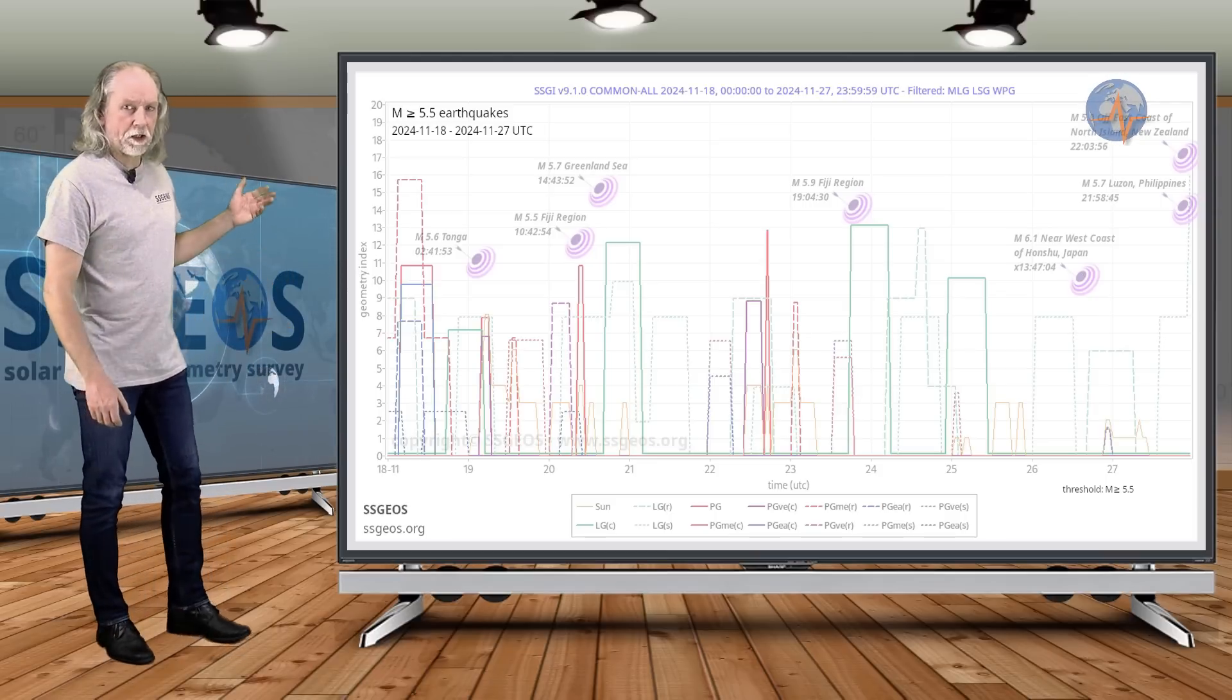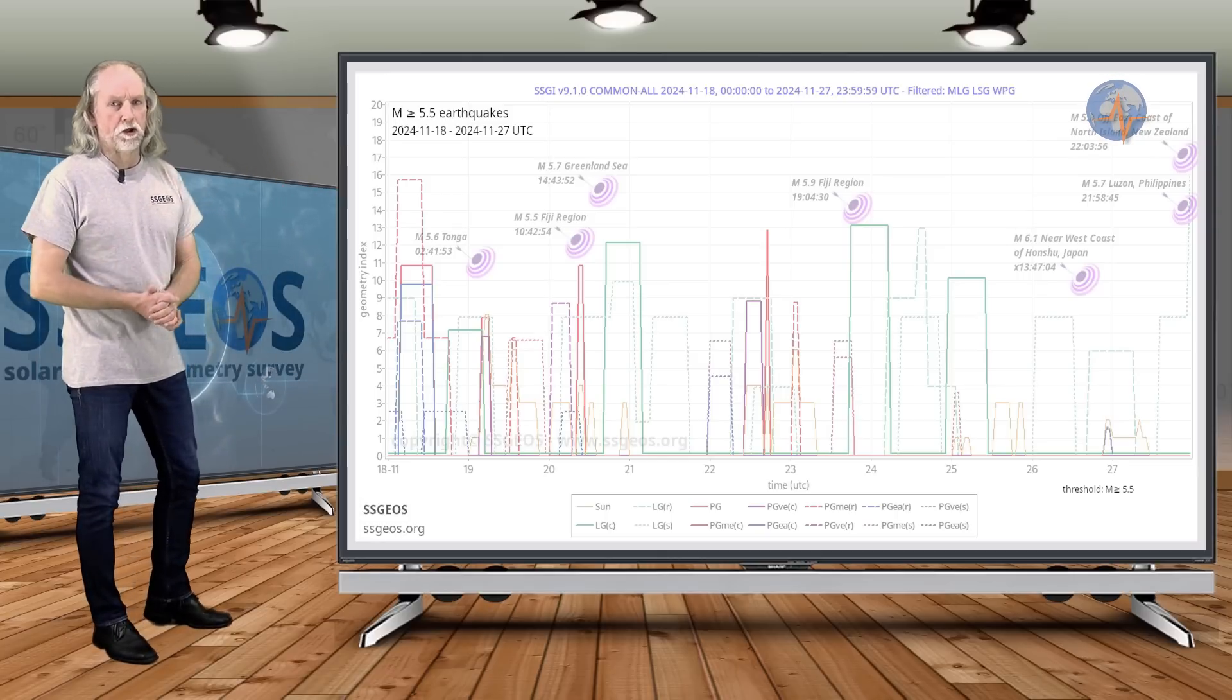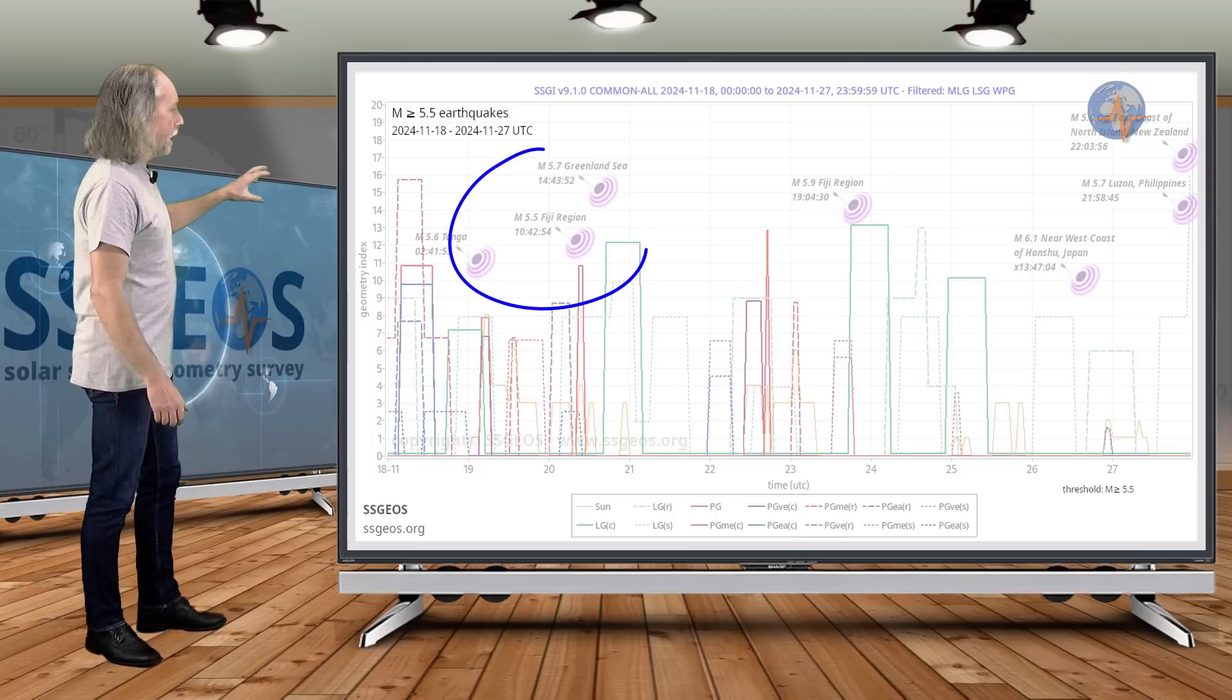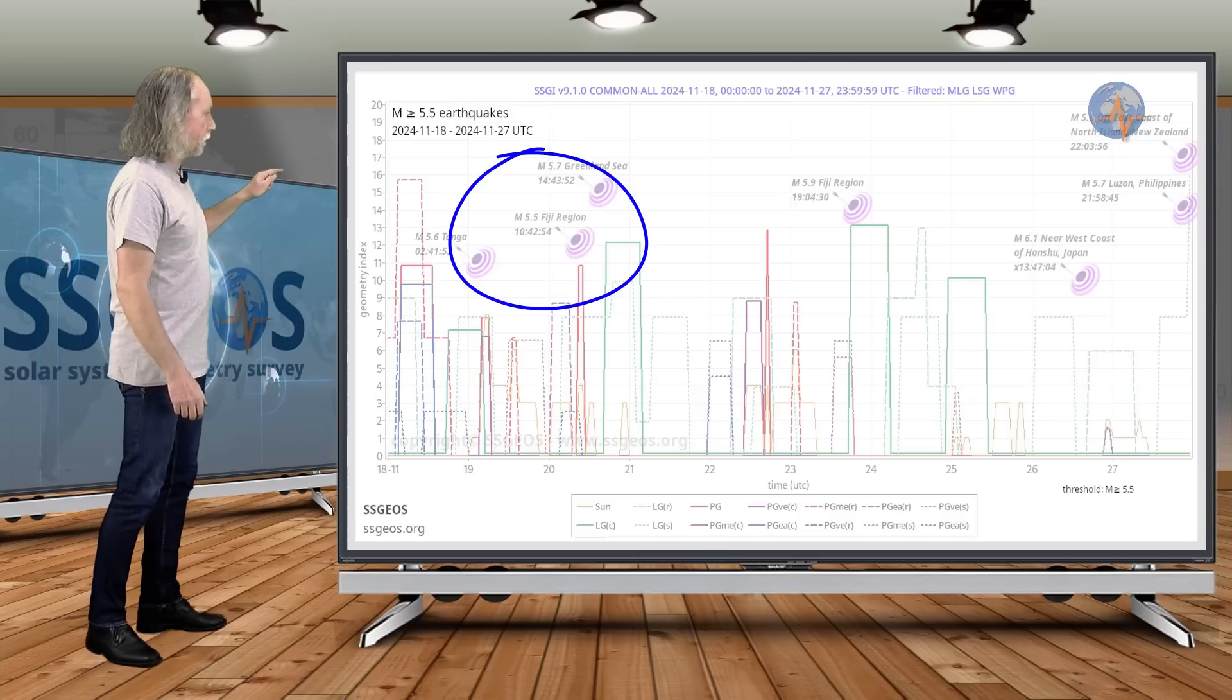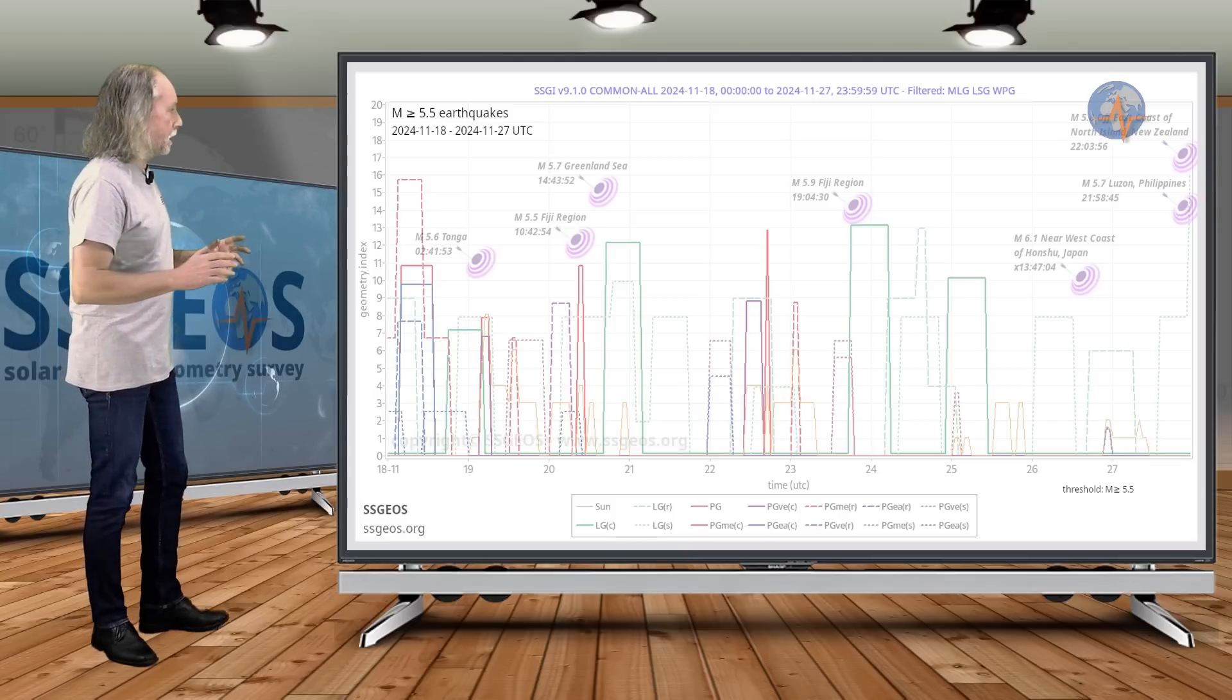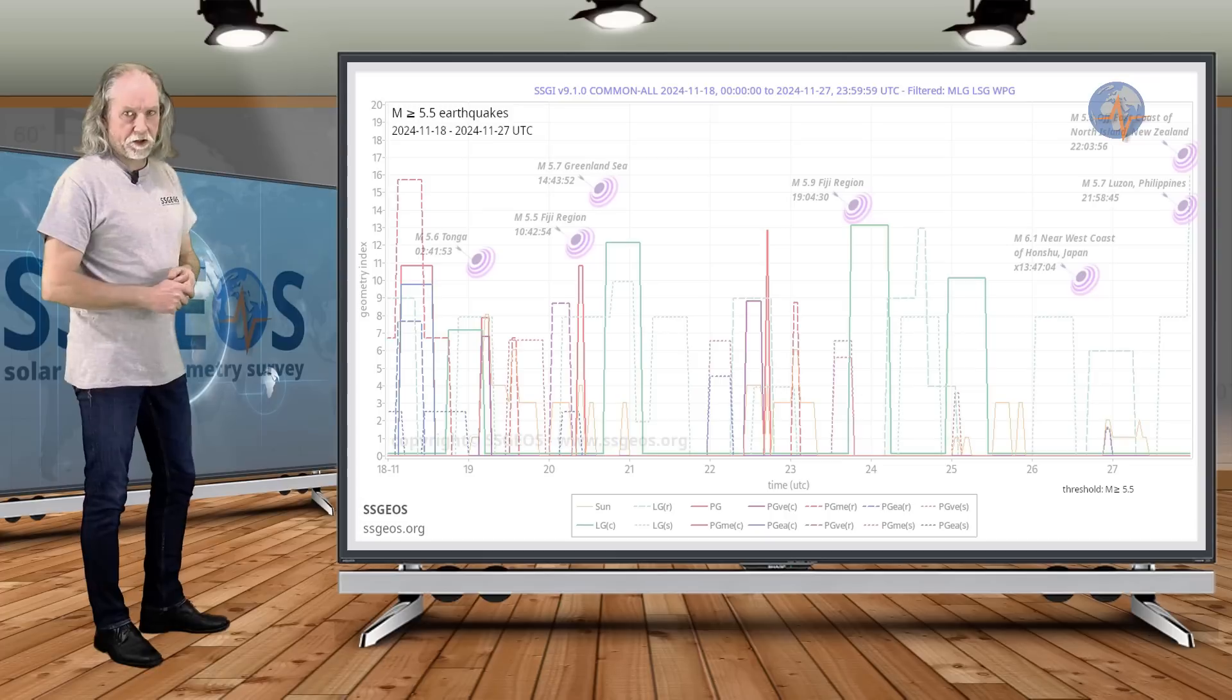So let's have a look at what we actually had in the previous timeframe here on the SSGI graph with magnitude 5.5 and larger earthquakes. We see some clustering at the start with the convergence of critical planetary geometry on the 19th and 20th as expected, but no large earthquake. It stayed actually at 5.7 at the Greenland Sea.